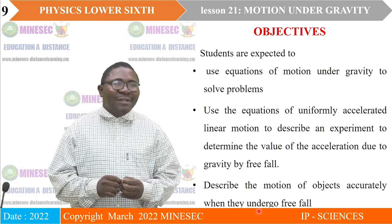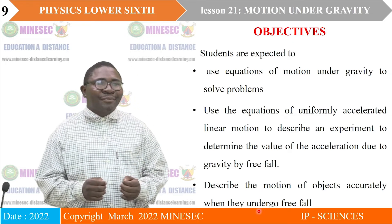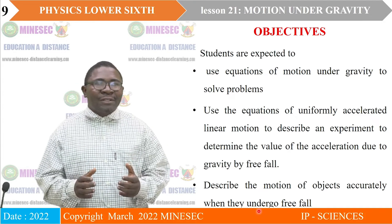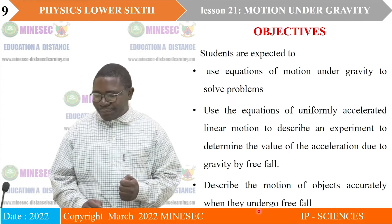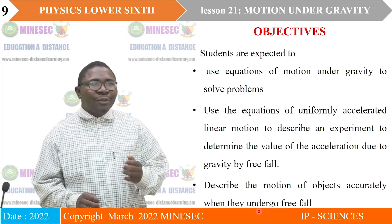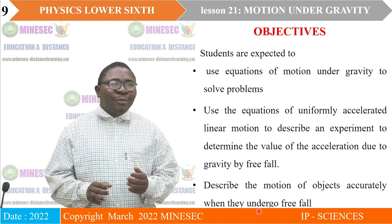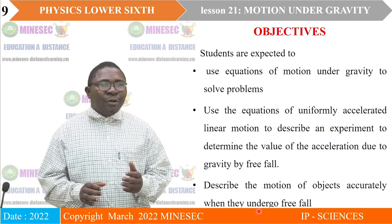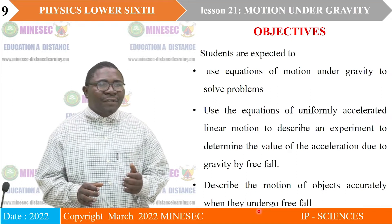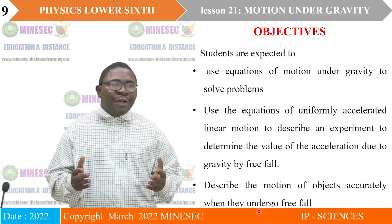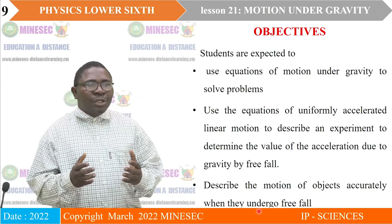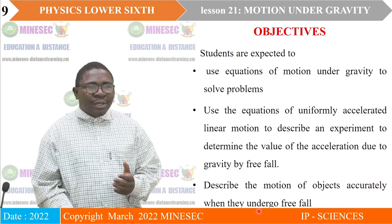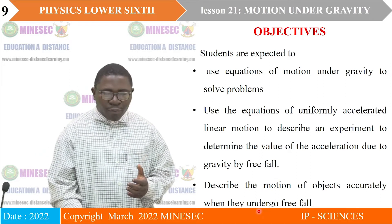Objectives of this lesson. At the end of this lesson, you should be able to use equations of motion under gravity to solve problems. You should be able to use the equations of uniformly accelerated linear motion to describe an experiment to determine the value of acceleration due to gravity by method of free fall. You should also be able to describe the motion of objects accurately when they undergo free fall.